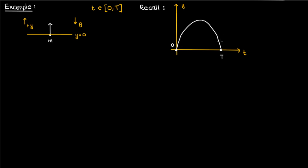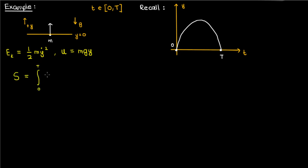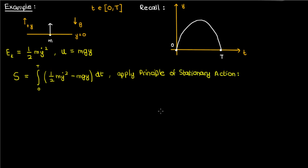Let's show using the principle of stationary action that the particle follows a parabolic trajectory in time. To use the principle of stationary action, we need to formulate the Lagrangian, which is the kinetic minus potential energy. The kinetic energy is ½m times y-dot squared, and the potential energy is the gravitational potential energy mgy. The action integral would then be the integral from zero to capital T of ½m times y-dot squared minus mgy. We apply the principle of stationary action, which says the path the particle takes must make this action integral stationary, and to find that path we use the Lagrange equation.